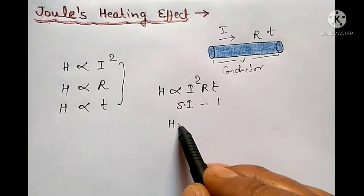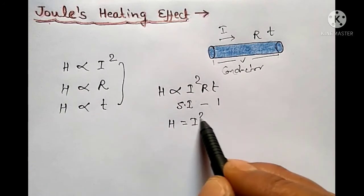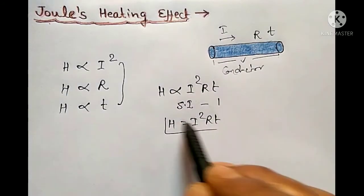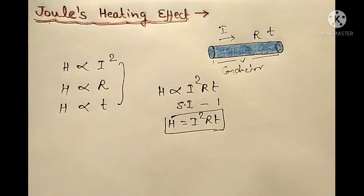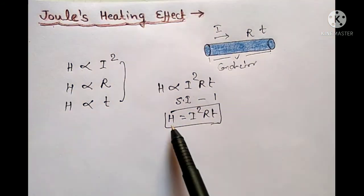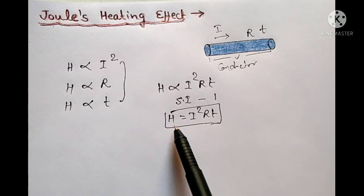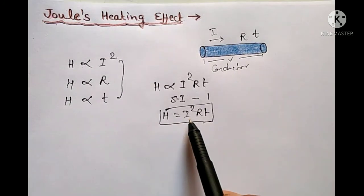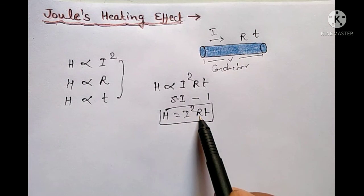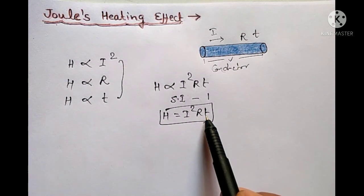So here we get a relation H equals I squared R t, which means when there is a current flow through a conductor, heat is produced. Then according to Joule, that amount of heat produced equals current squared multiplied by resistance multiplied by time.